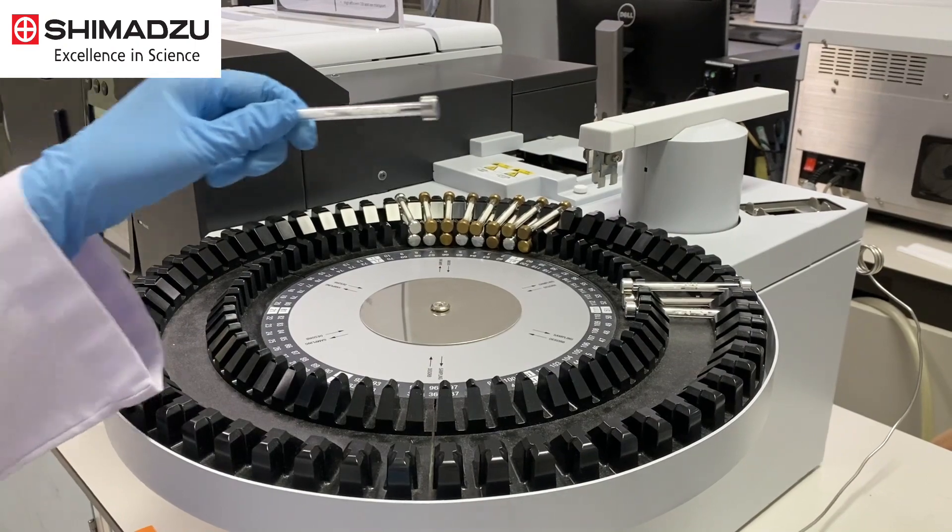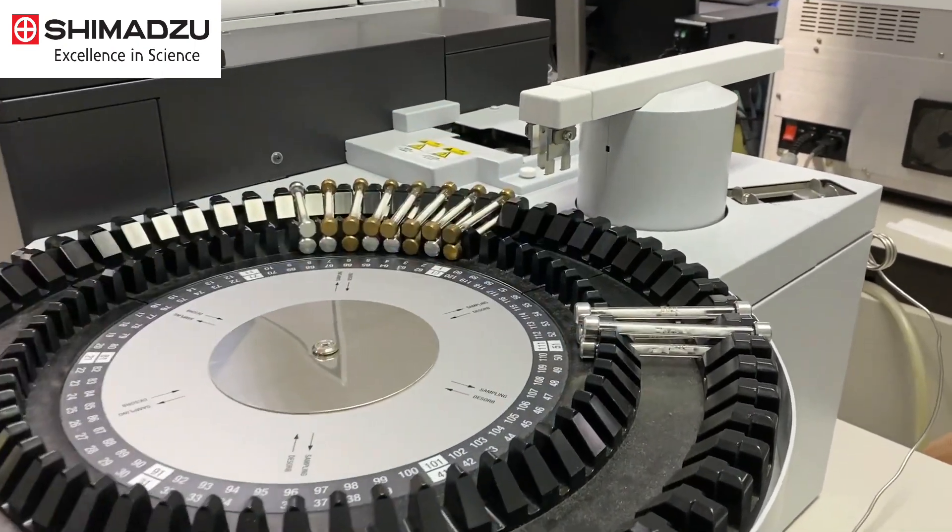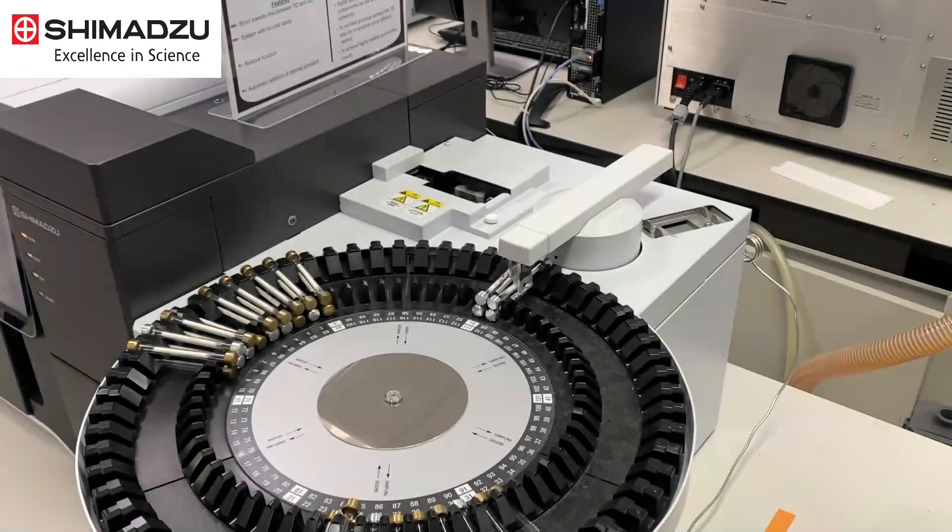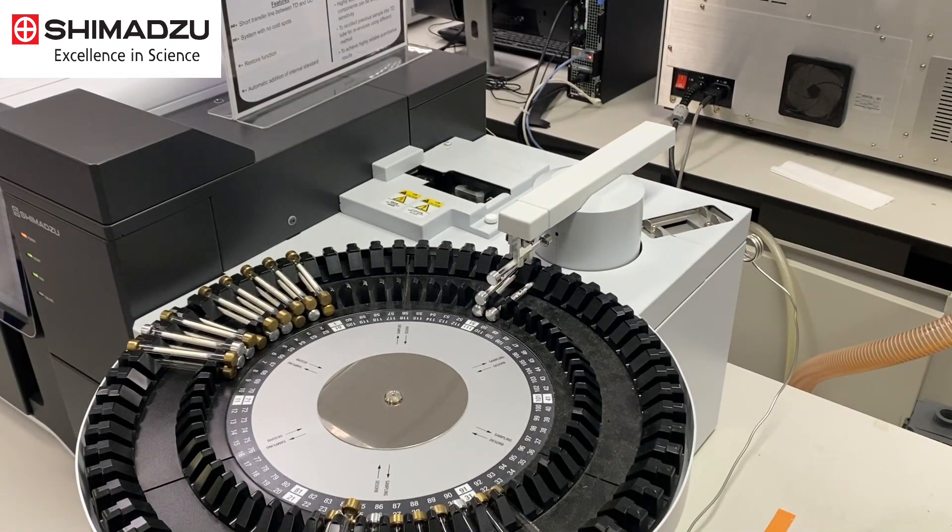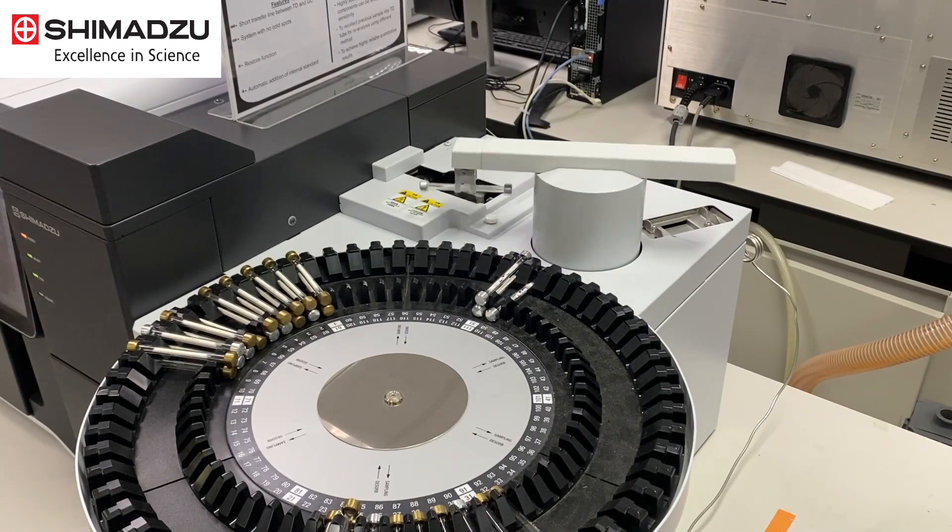The filled TD sample tube was placed on the tray of the thermal desorption system. The auto-sampler arm transferred the TD tube to the heater.